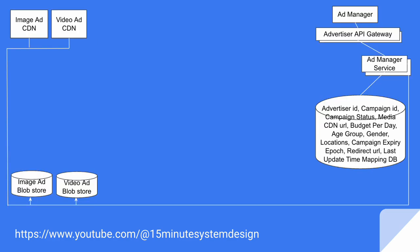Now let's talk about the design. The advertiser needs to sign up first. Once logged in, the ad manager can manage ad campaigns using the ad manager service. This service is responsible for ad view, update, and delete of a campaign. It also allows the ad manager to update the status of a campaign — active, paused, expired, or removed — and its daily budget at any point in time. This service also enables the ad manager to upload ad creatives to blob store, which get pulled further by CDN.